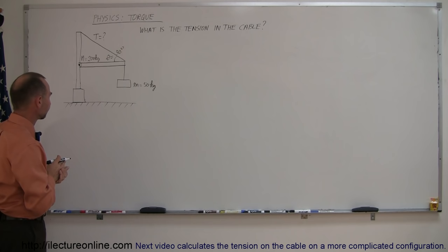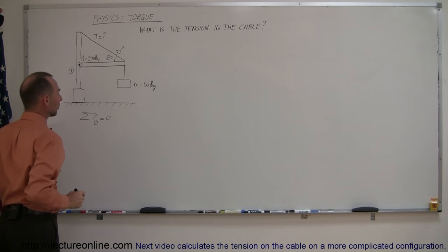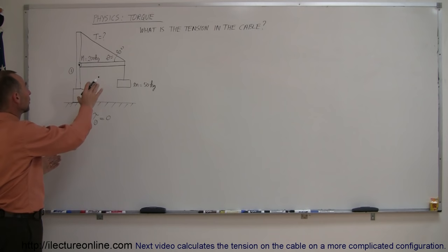I'm going to label that pivot point number one, and I can say that the sum of all the torques around pivot point number one must add up to zero. Now I have to identify all the torques related to this problem relative to that pivot point.